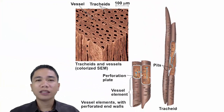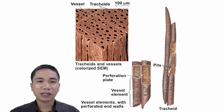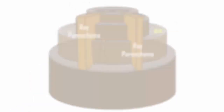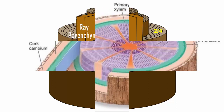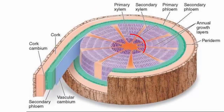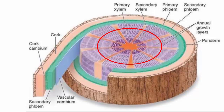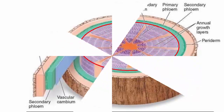Most conduction in xylem is upward and downward, but some is lateral or sideways. The lateral conduction takes place in the rays. Ray cells, which also function in food storage, are actually parenchyma cells produced in horizontal rows by special cells of the vascular cambium. In woody plants, the rays radiate out from the center of the stems and roots like the spokes of a wheel.